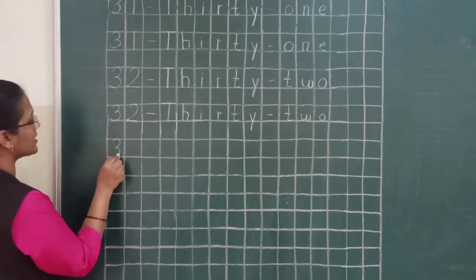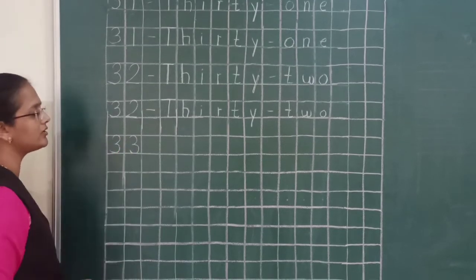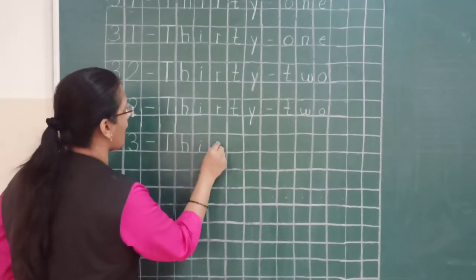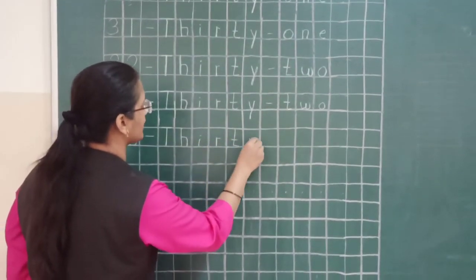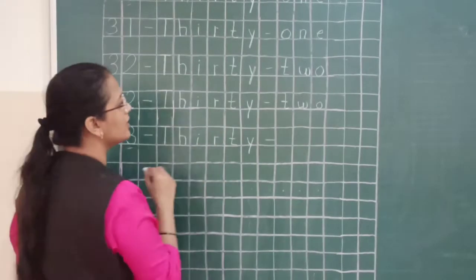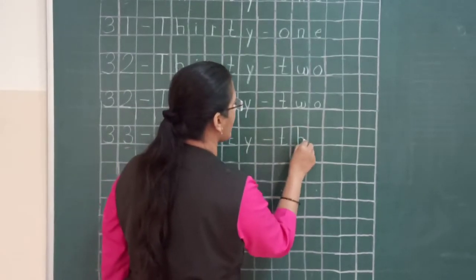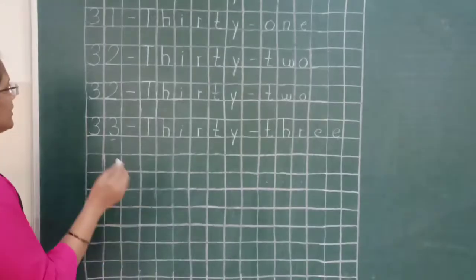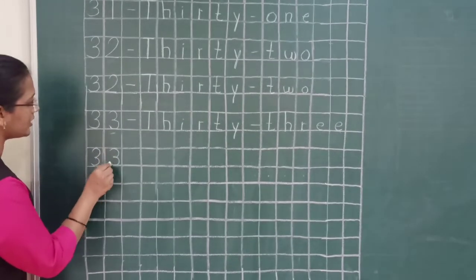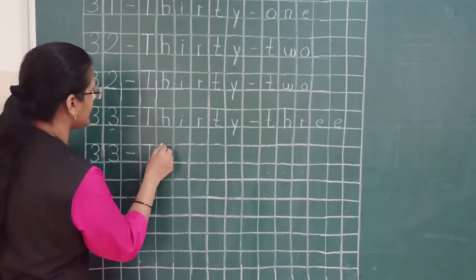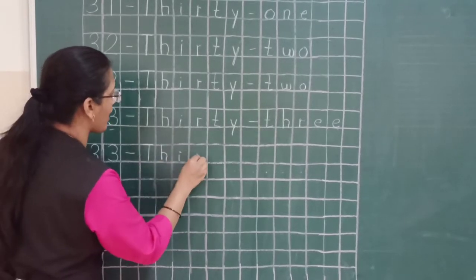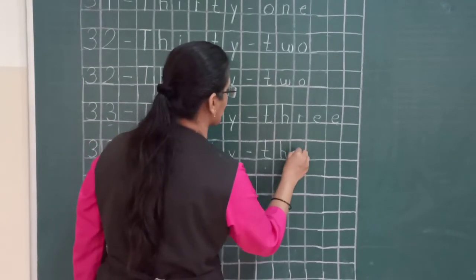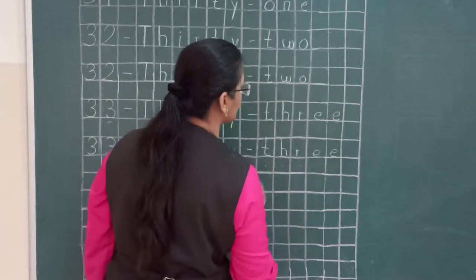And next number is 33. Again we will write the spelling of number 30: T-H-I-R-T-Y, 30. And the spelling of number 3 is T-H-R-E-E, 3. One more time — spelling of number 33: T-H-I-R-T-Y, 30, and T-H-R-E-E, 3. So, 33.